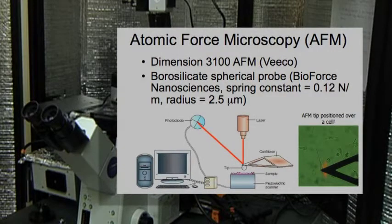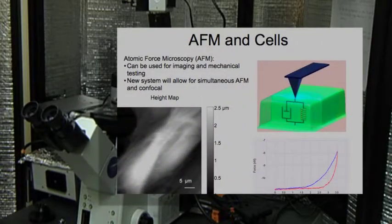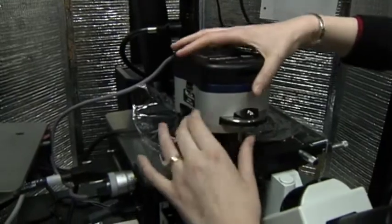The way that works is you have a tiny, tiny little tip and you can come in and you can push on the cell or you can also image the cell. And as the tip scans across the surface, it will go up and down depending on what's on the surface. And then you can record that.